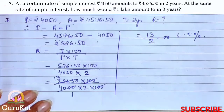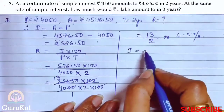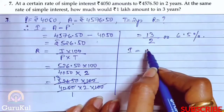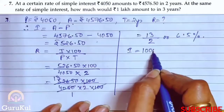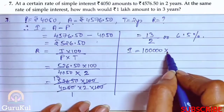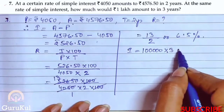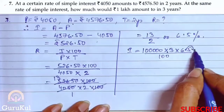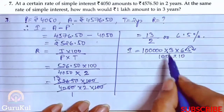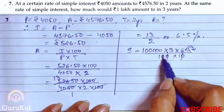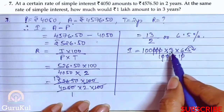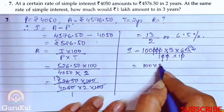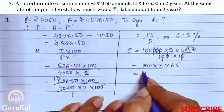Now we are asked: at the same rate of interest, how much would Rs. 1 lakh amount to in 3 years? Interest = P × T × R / 100. P is 1,00,000. Time is 3 years. Rate is 6.5/100. So 1,00,000 × 3 × 65 / (100 × 100).